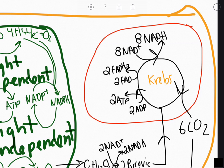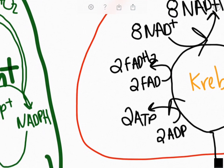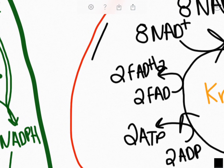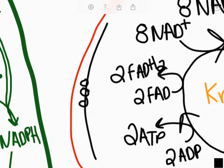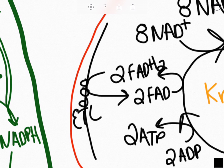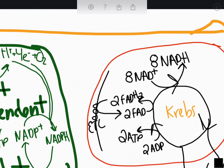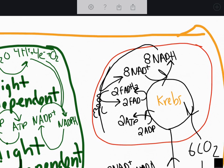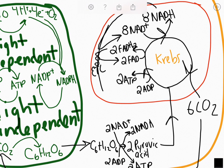So we're going to have the electron transport chain, made up of some proteins. The FADH₂ is going to come and drop off its energy, break down releasing that energy, and then be recycled back. NADH is going to do the same thing — come, drop off its energy, and be recycled back as it gets broken down.